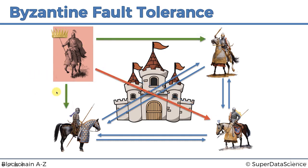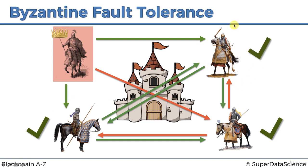So the traitor commander tells two generals to attack and one to retreat. They relay what they heard: 'attack,' 'retreat,' 'attack.' Each loyal general receives two green arrows and one red, so both decide to attack. The army reaches consensus. If the commander had issued two 'retreat' orders instead, they would all have retreated safely. This shows the algorithm of taking the majority of relayed information is Byzantine fault tolerant.